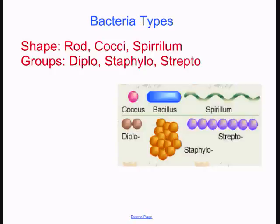Another way to characterize bacteria is how they're organized. Many bacteria live by themselves. Some like to pair up — we call those diplobacteria. Some exist in clusters like grapes — we call those staphylo, for example staphylococci. And then there's strepto, like streptococcus, which exist in long chains. What you're going to do today is look at a bacterial slide and, by the shape, try to narrow down what type of bacteria it might be.